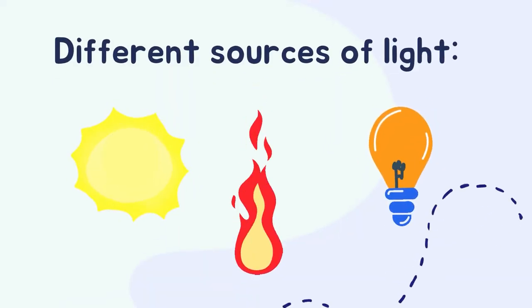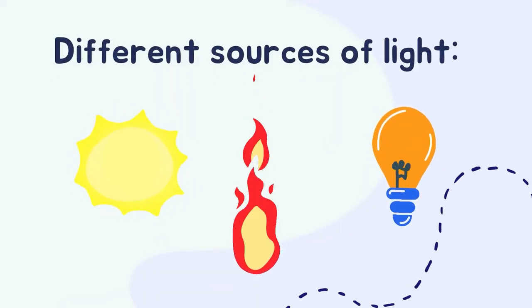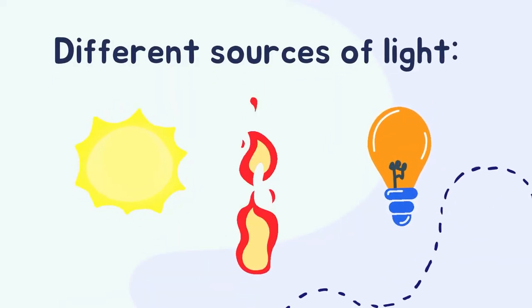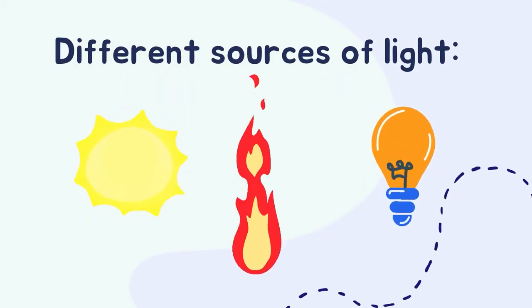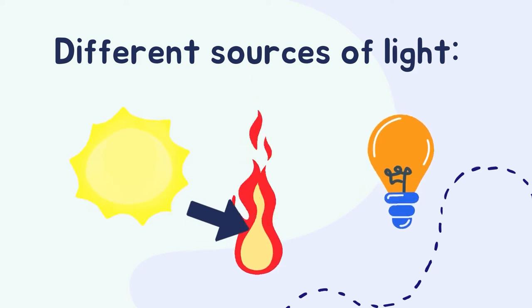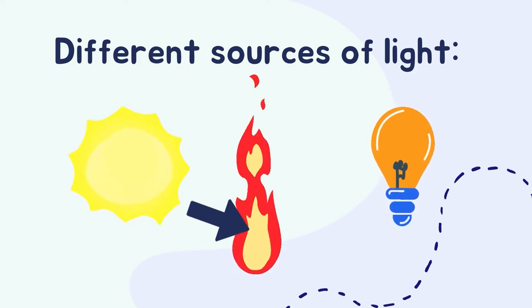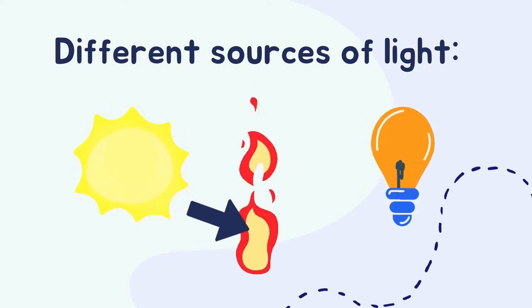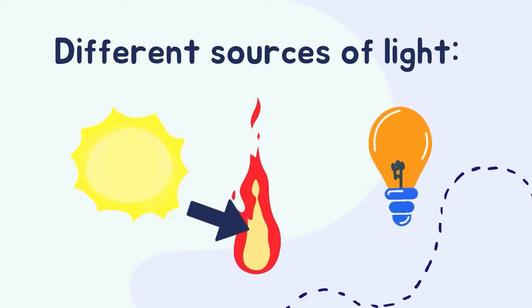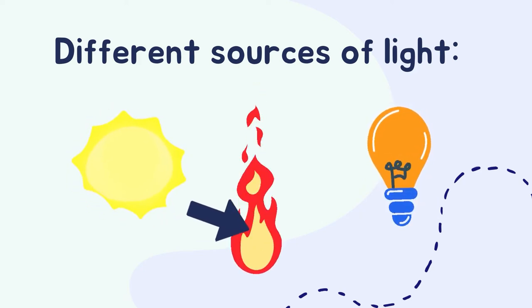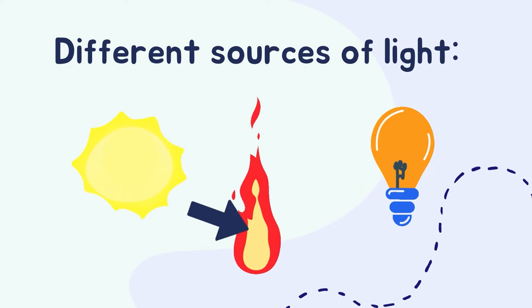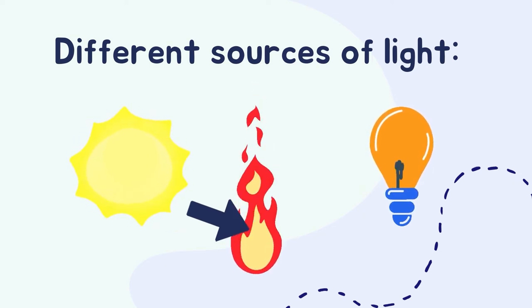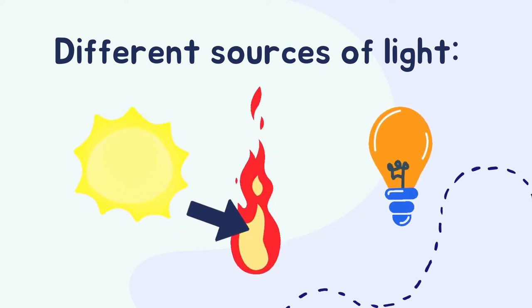There are different sources of light all around us. The major one is the Sun. Another source of light is fire. Fire is a natural source of light. It can be used to keep ourselves warm, cook, and keep animals away.